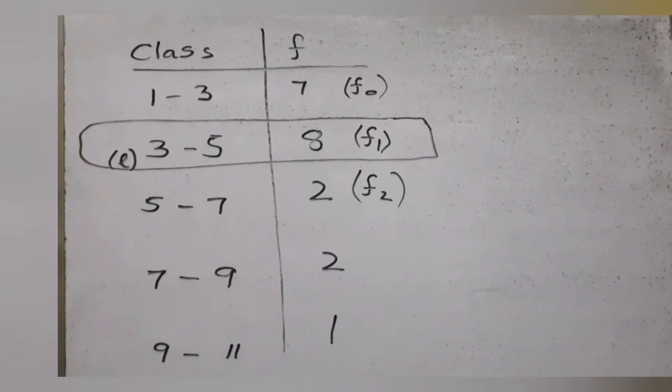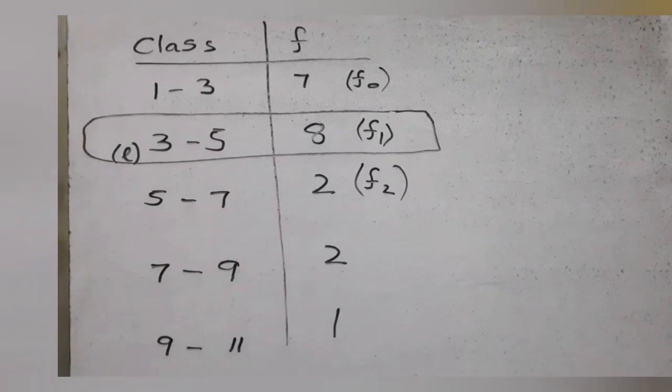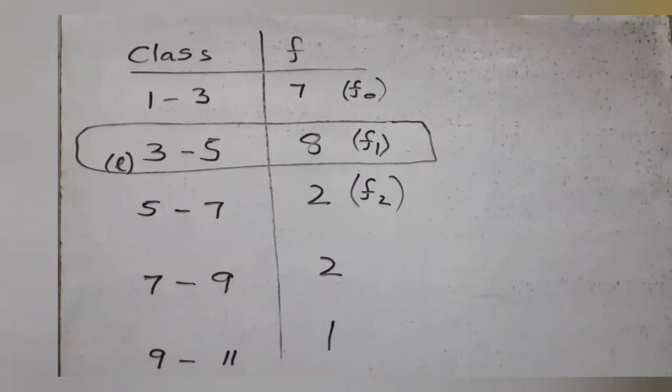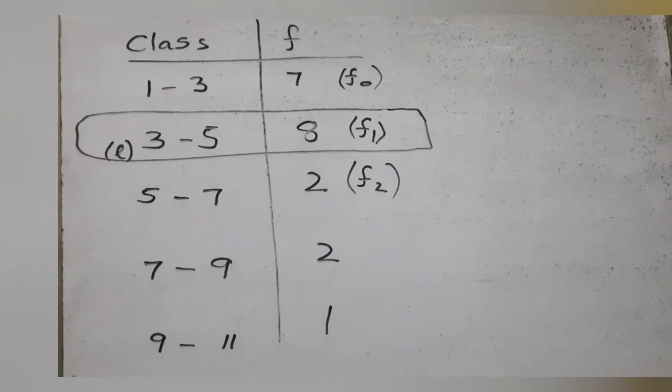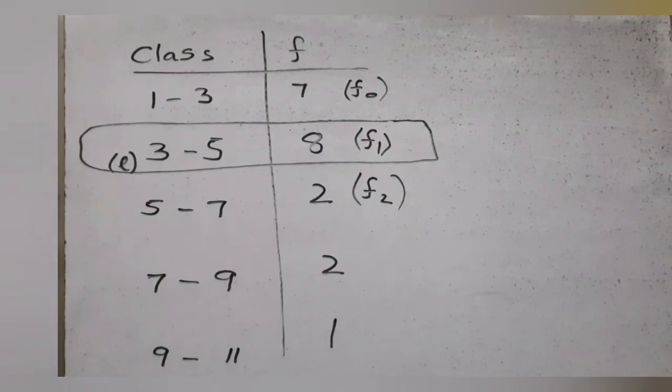The lower limit of the modal class L equals 3. F1 is 8, the highest frequency. F0 is 7, the previous class's frequency, and F2 is 2 from the next class.